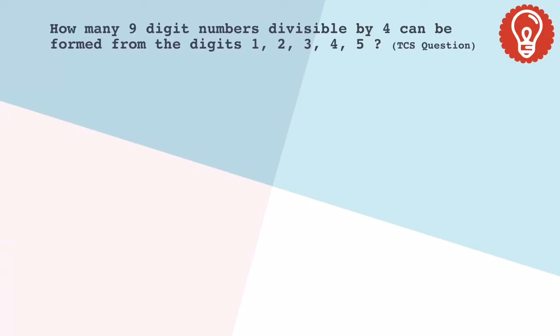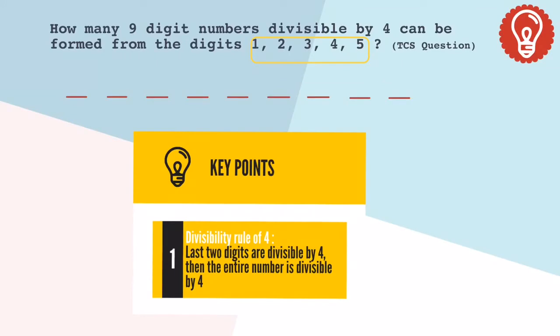It's a nine-digit number, so let's first take nine blanks. This nine-digit number should be formed only using these five digits, so it's obvious that numbers can repeat. The third condition in the question: this nine-digit number should be divisible by four. Now keeping the divisibility rule of four in mind, let's focus on the last two numbers.